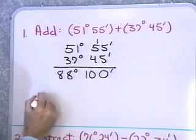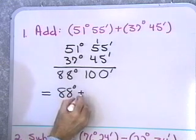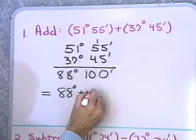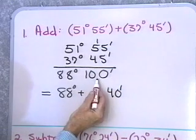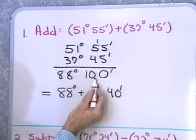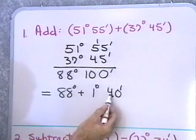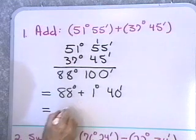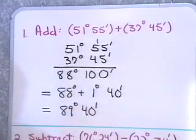And 5 and 3 is 8, so I have 88 degrees. This is the same as 88 degrees plus 100 minutes, which equals 1 degree 40 minutes, because 60 minutes gives you 1 degree. So 100 minutes is 60 plus 40 minutes, or 1 degree plus 40 minutes. That gives us 88 plus 1 equals 89 degrees, 40 minutes.